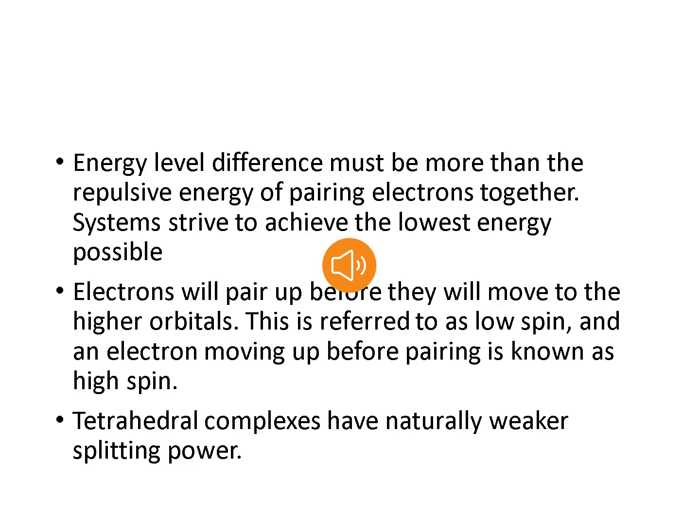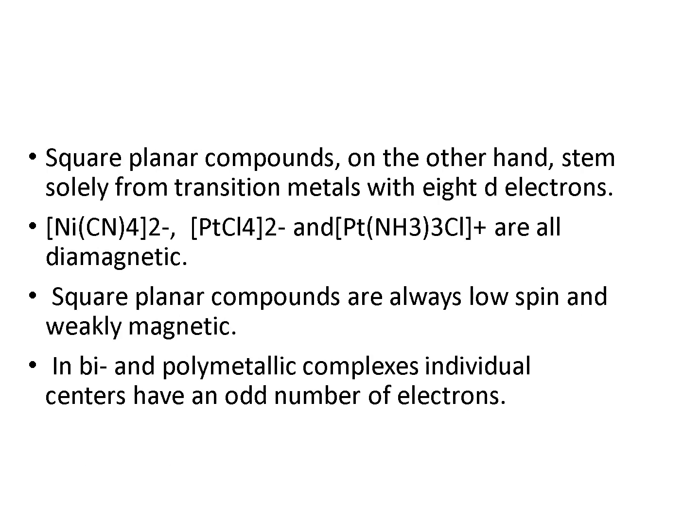Tetrahedral complexes have naturally weaker splitting power. Square planar compounds, on the other hand, are seen solely for transition metals with d⁸ electrons. Compounds such as cyanonucleides, tetrahedral chloroplatinide, and triamine chloroplatinum are all diamagnetic. Square planar complexes are always low spin and weakly magnetic. In bi- and polymetallic complexes, individual centers have an odd number of electrons.